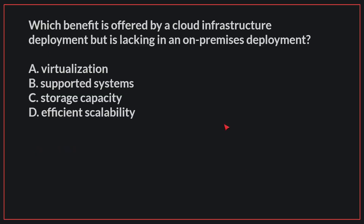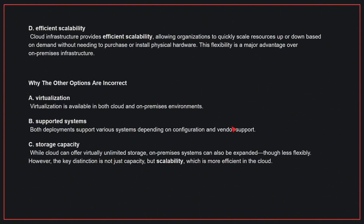Which benefit is offered by a cloud infrastructure deployment but is lacking in an on-premises deployment? The correct answer is D. Cloud infrastructure provides efficient scalability, allowing organizations to quickly scale resources up or down based on demand without needing to purchase or install physical hardware. This flexibility is a major advantage over on-premises infrastructure.